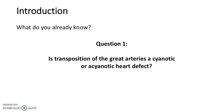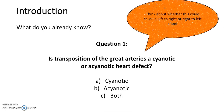Question 1: Is transposition of the great arteries a cyanotic or acyanotic heart defect? A, cyanotic. B, acyanotic. C, both. Think about whether this would cause a left-to-right or a right-to-left shunt. The answer is A, cyanotic.